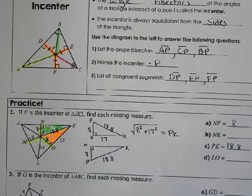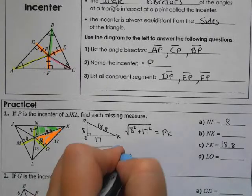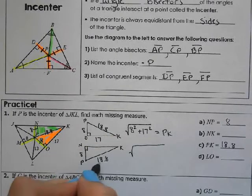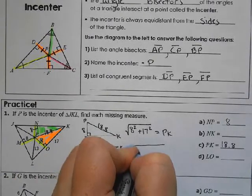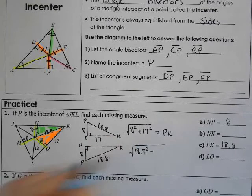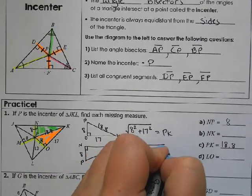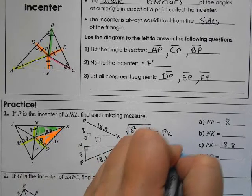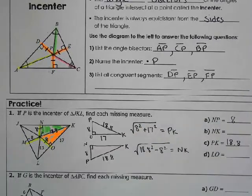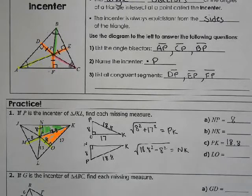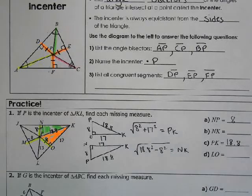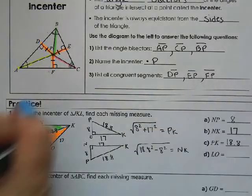So again, Pythagorean theorem. But this time I know the hypotenuse. So I'm going to take the hypotenuse squared minus the leg squared. And that will give me NK. And that works out to about 17. So NK is 17.